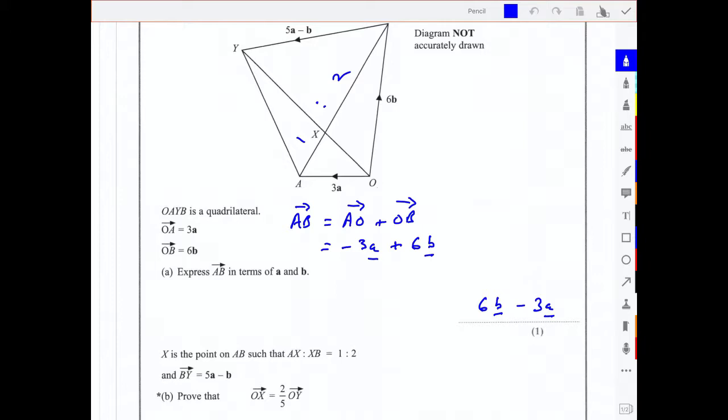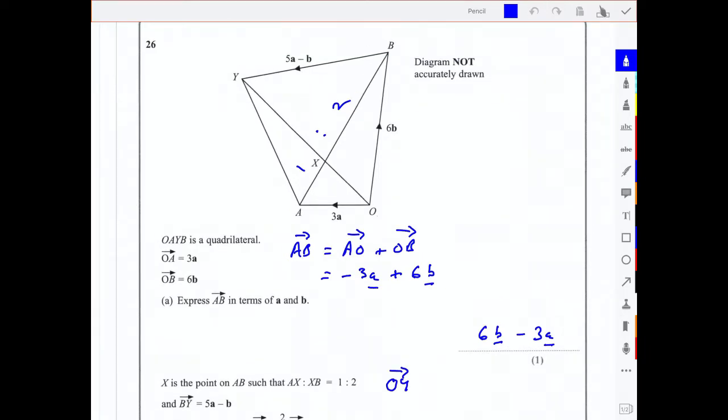So let's first of all find OY. How do I get from O to Y? Well, routes that we know, we can go from O to B and B to Y. So OY is equal to OB plus BY.